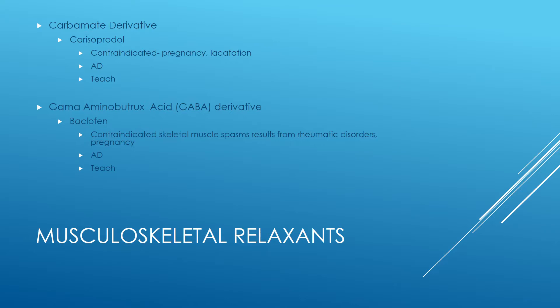Baclofen is contraindicated for skeletal muscle spasms resulting from rheumatic disorders and also in pregnancy. It's used to treat spasticity due to musculoskeletal and spinal injuries. It can be given PO or intrathecally. It's metabolized in the liver and excreted in the urine, and dose adjustment is recommended if we have impairment in those areas. Adverse effects include CNS effects — drowsiness, dizziness, confusion, fatigue, headache — as well as constipation, hypotension, weakness, and insomnia.